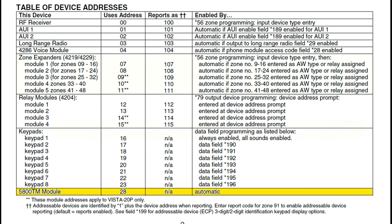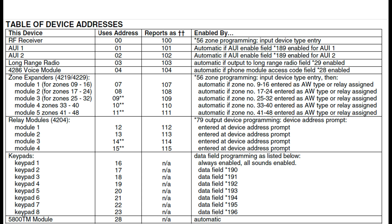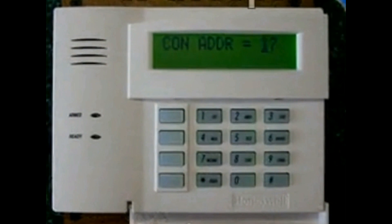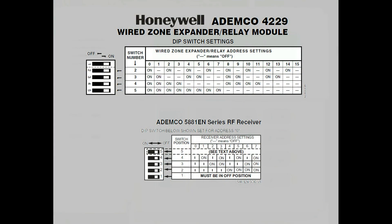And finally, address 28 is reserved for the 5800TM module. Everything we've discussed on this chart is how to activate the address inside the Vista 20 panel. You will, of course, have to activate the address inside the attached computer that you're trying to program for. It could be as easy as this graphical user interface panel, where it pops up and says what would you like your address to be. Or it could be more complicated, where you have to push a series of secret keys in order to enter the address. And some systems will actually make you go onto the circuit board and change dip switch settings. The installation manual for that piece of equipment will have tables that tell you how to set the dip switches.